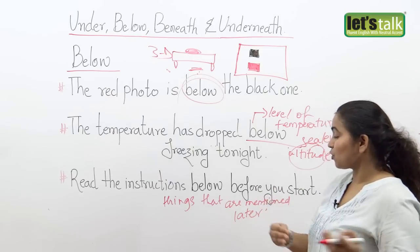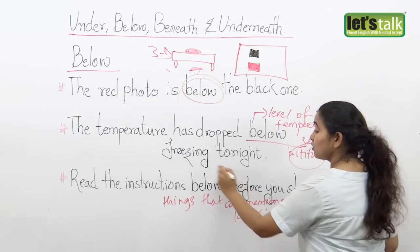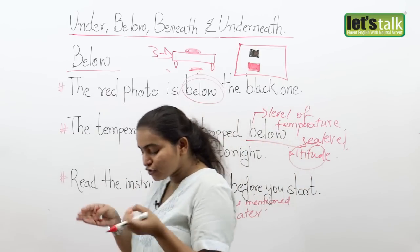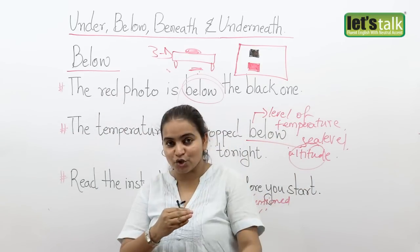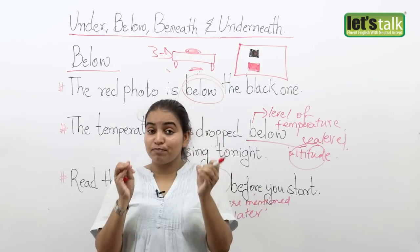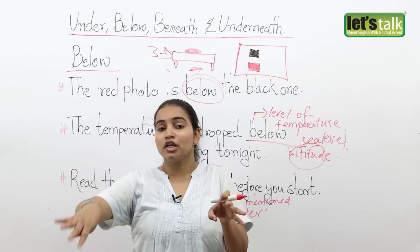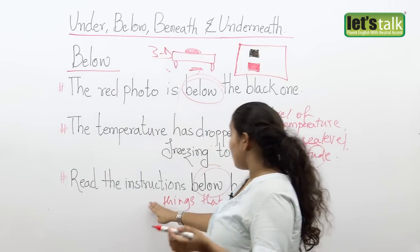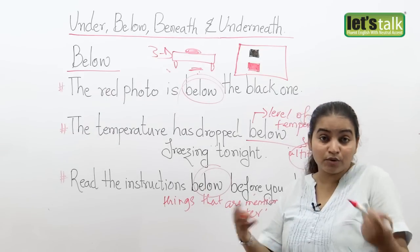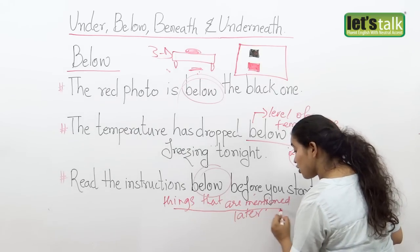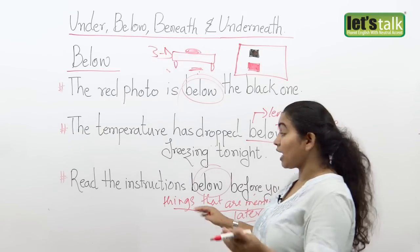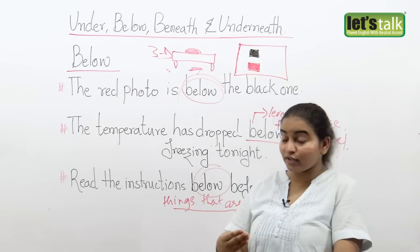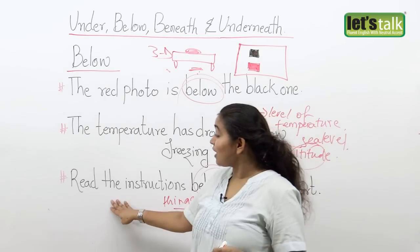The last context where you use below is when talking about things that are mentioned later. The sentence is: read the instructions below before you start. I use the word below — not under — because there are certain things I need to consider before my next action. Maybe I'm sitting in an exam and I need to read the instructions mentioned at a later stage before I start. Now that we've learned below, let's talk about the other two words: beneath and underneath.